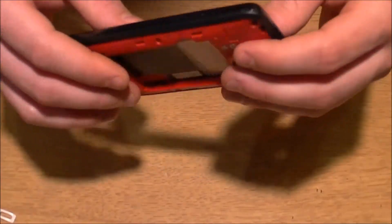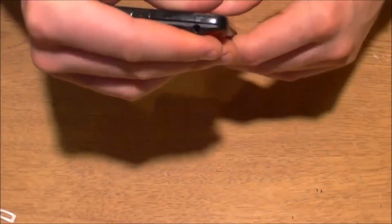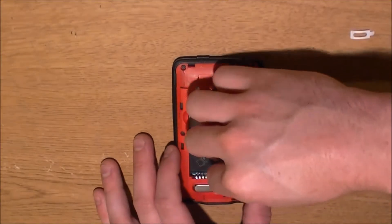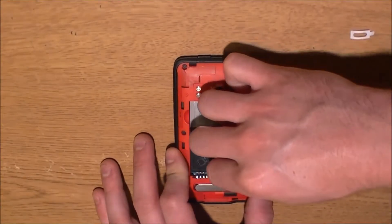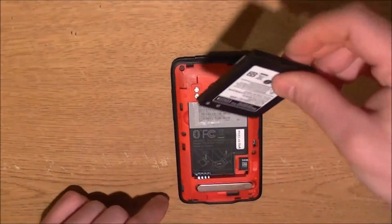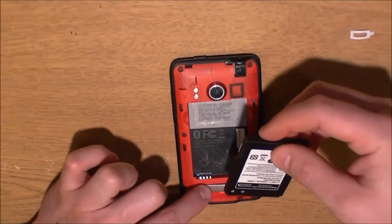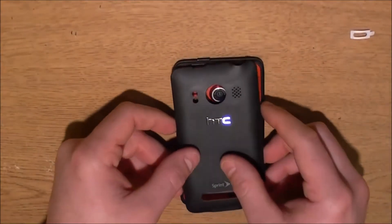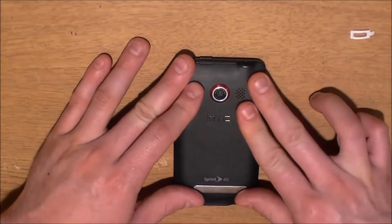Now that you have all the screws back in. Just make sure that all your edges are nice and tight. Which they are. Now that you have the back all put back together. Just slide in your micro SD card. Click it. Put your battery back in. Terminal's going down. On the pins. Put your back cover on. And you're all set.